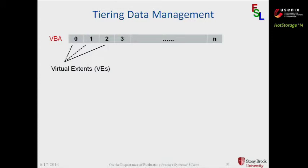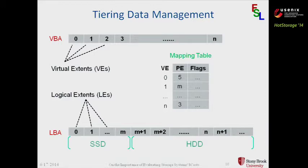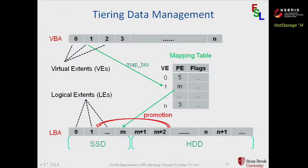We did the same thing to the logical block address — some belong to the SSD and some belong to the HDD physically. We have an in-memory data structure called the mapping table that maps from a virtual extent to one physical extent. We promote hot extents to the SSD when the access of that extent goes beyond a certain threshold. We demote cold extents from the SSD to the HDD when there is no free space in the SSD. For the promotion to always succeed, we need to reserve a small amount of extra extents.